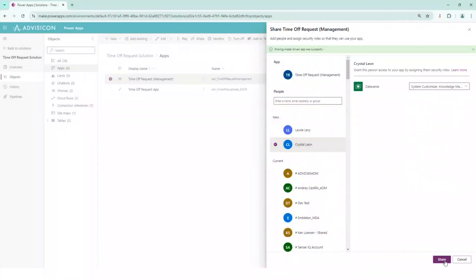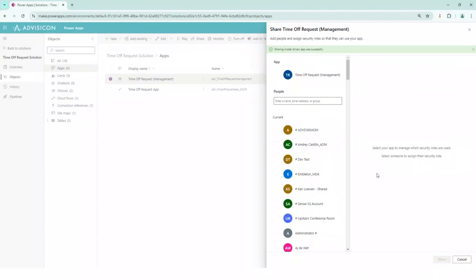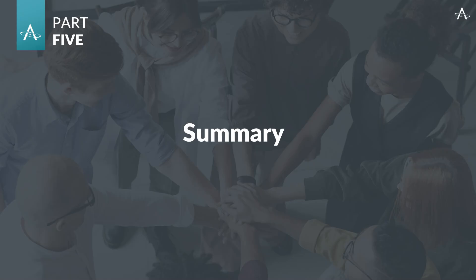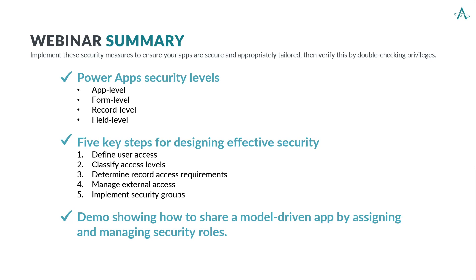The user will then receive an email confirming the share and their new role. In today's webinar, we explored the various security levels in PowerApps, including app-level, form-level, record-level, and field-level security. We walked through the five key steps for designing effective security — from identifying user groups and assigning roles to defining record access and managing security groups. During the demo, we demonstrated how to share a model-driven app by assigning and managing security roles.